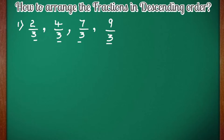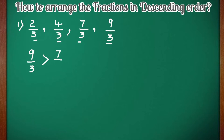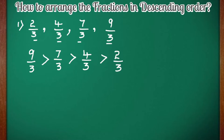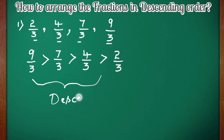If you are arranging like fractions in descending order, the fraction with the highest numerator has the greater value. So here 9 by 3 is the greatest fraction, and it will be written first. Descending order means you write the greater one first and the smallest one last. So: 9 by 3 is greater than 7 by 3, is greater than 4 by 3, is greater than 2 by 3. The greatest fraction is 9 by 3 and the smallest fraction is 2 by 3. This is how we write like fractions in descending order.